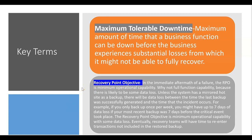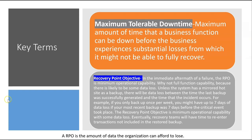Another key term is Recovery Point Objective (RPO). In the immediate aftermath of a failure, the RPO is the minimum operational capability that is the goal. We aim for minimum operational capability rather than full functionality because, without a mirrored hot site, there will be data loss between the time the last backup was successfully generated and the time the incident occurs. For example, if you back up only once per week, you might have up to seven days of data loss. The RPO represents the amount of data the organization can afford to lose.